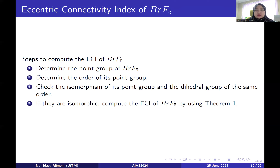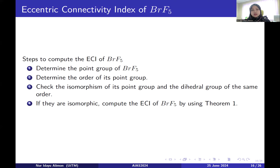For the Eccentric Connectivity Index of bromine pentafluoride, there are a few steps to follow. First, determine the point group of bromine pentafluoride, then determine the order of its point group. Check the isomorphism of its point group with the dihedral groups of the same order. If they are isomorphic, compute the ECI of bromine pentafluoride using theorem 1 — the generalization of the Eccentric Connectivity Index of the power graph of the dihedral group.